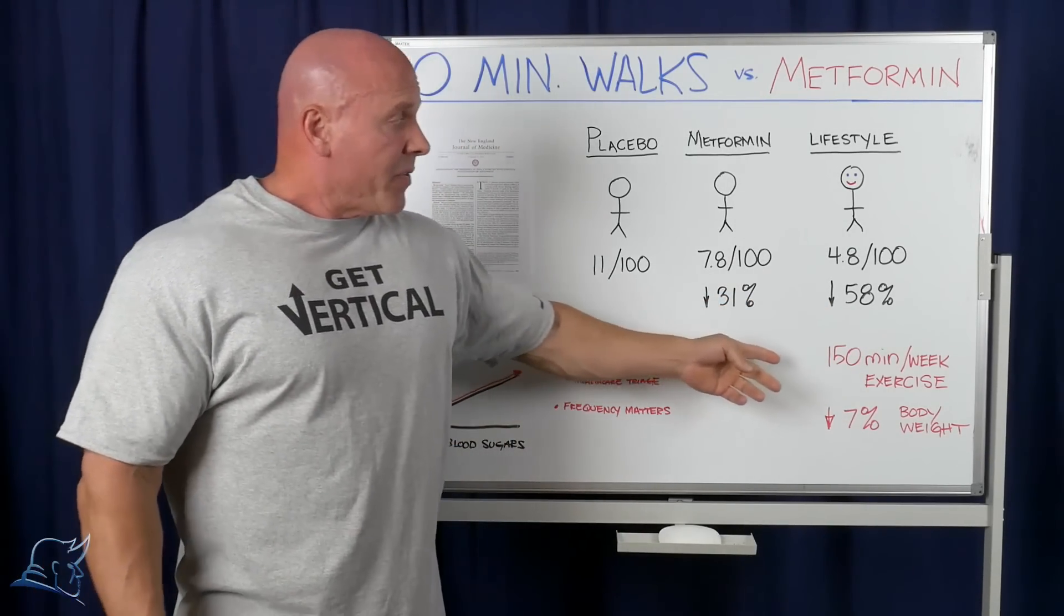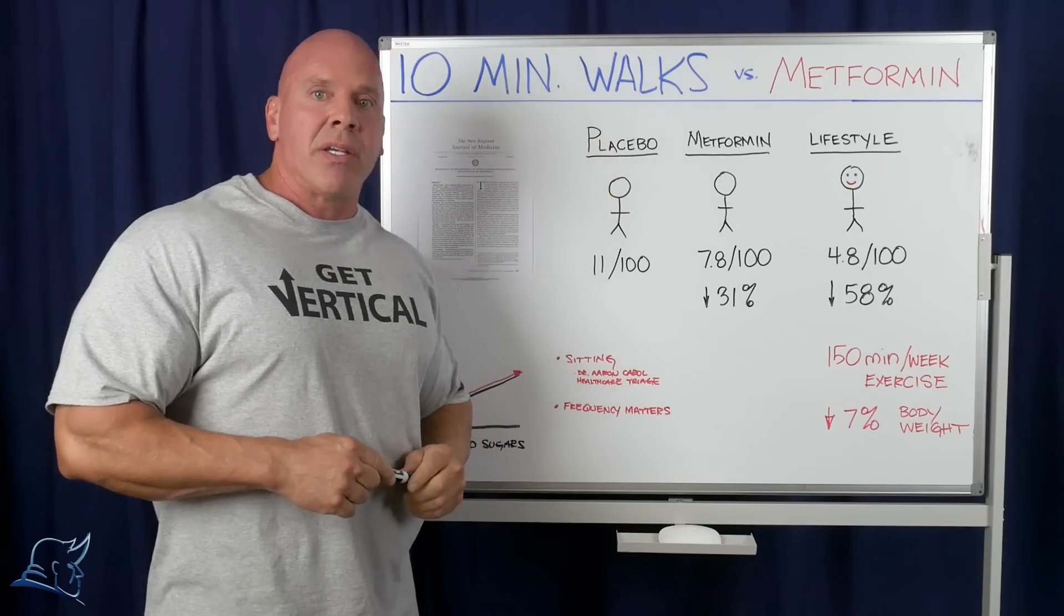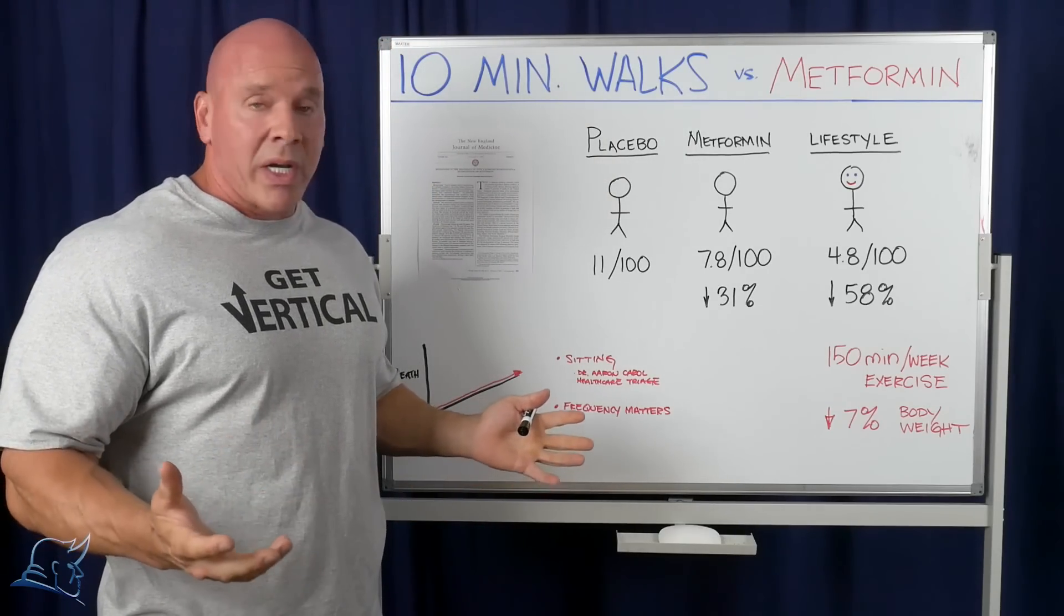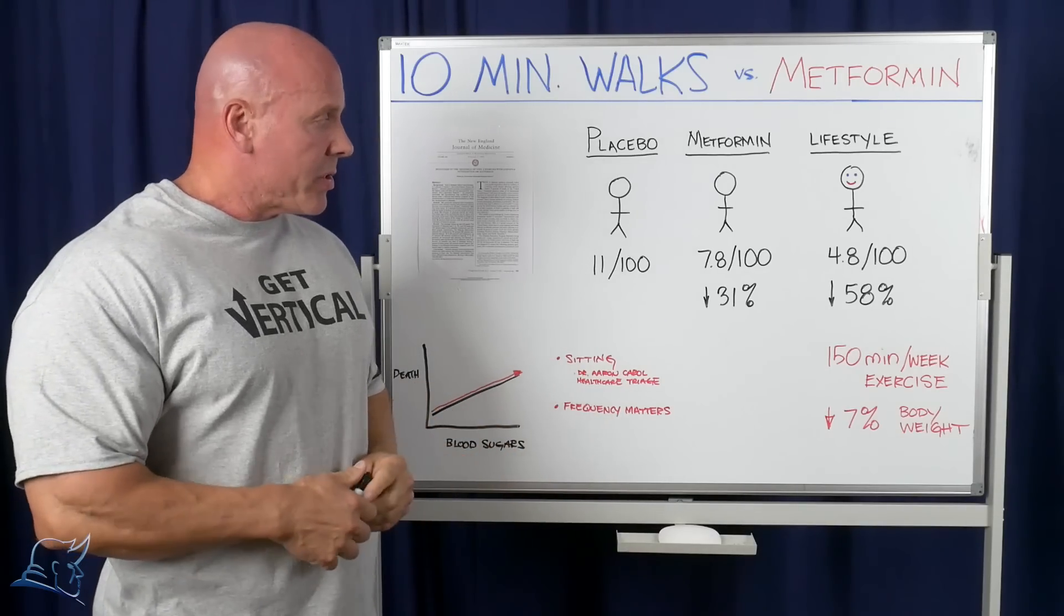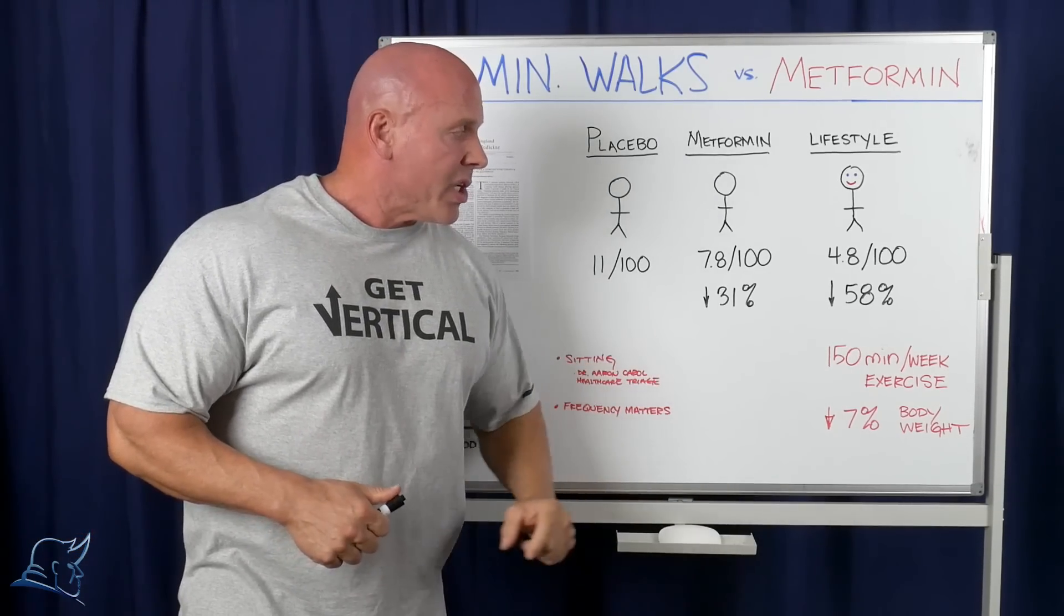What was the lifestyle? The lifestyle was 150 minutes of exercise each week, which is about 20-25 minutes a day, and the exercise was a brisk walk, of all things.